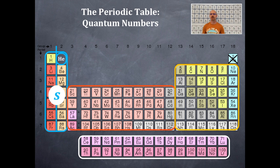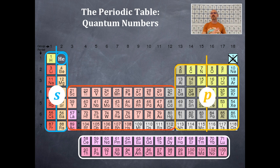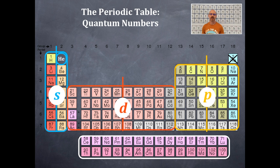Looking at the P-type orbitals, I've drawn a vertical orange line right in the middle of them — one half on the right-hand side, one half on the left-hand side. I'm going to do the same thing with the D-type orbitals: one half on the right, one half on the left. And the same for the F-type orbitals: one half on the right, one half on the left.